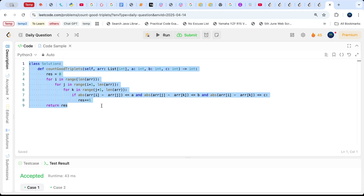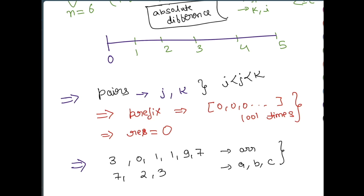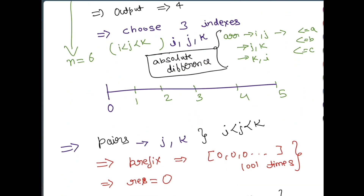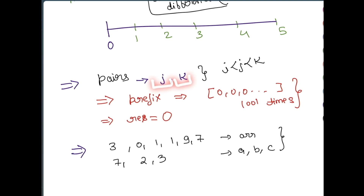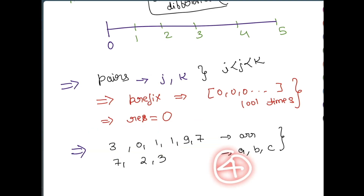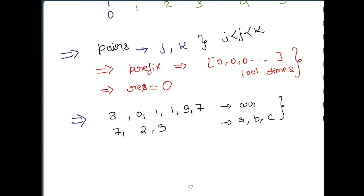This brute force works but let's try to optimize it. We are currently using O(n³) time complexity. In the optimized approach, we create all pairs of valid index j and k values, and then for each pair we just need to find how many valid values of index i exist. If this is our input with values of a, b, and c, the output is 4. We can utilize a prefix array to count efficiently.